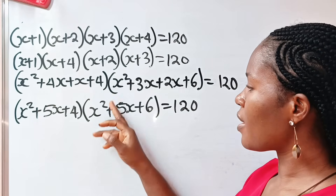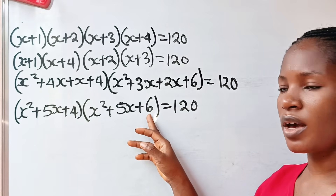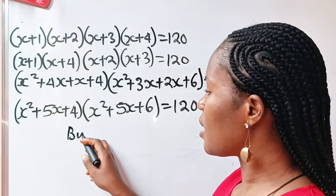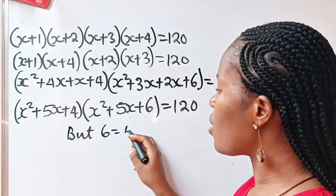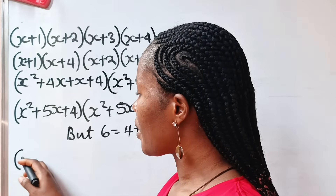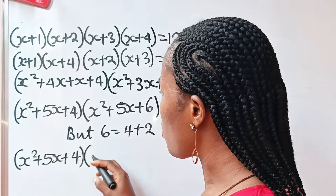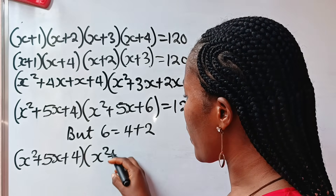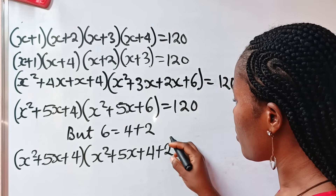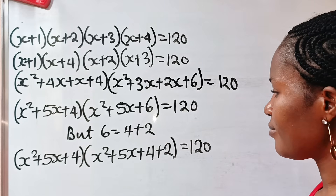So we have x squared plus five x plus four, and x squared plus five x plus six. Notice we can express six as four plus two. So this becomes x squared plus five x plus four, and x squared plus five x plus four plus two, all equal to 120.